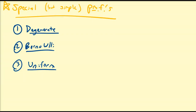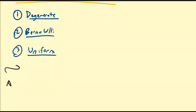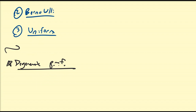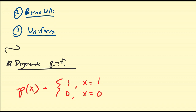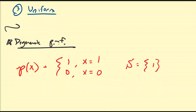Let's start with the simplest of simple PMFs, namely the degenerate distribution. The degenerate PMF can be defined as: the probability that X equals x is equal to 1 if x equals 1, and 0 if x is not equal to 1. So the only value in the support of this function is 1.